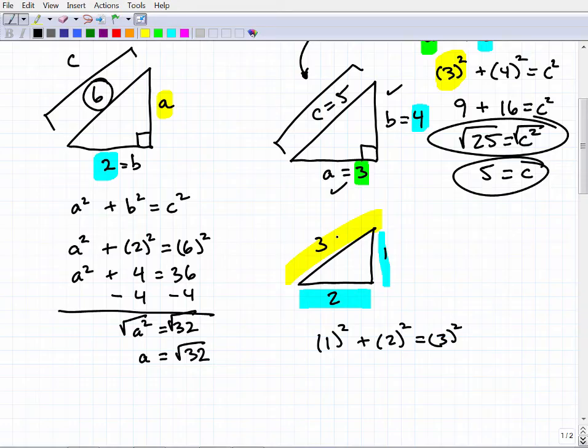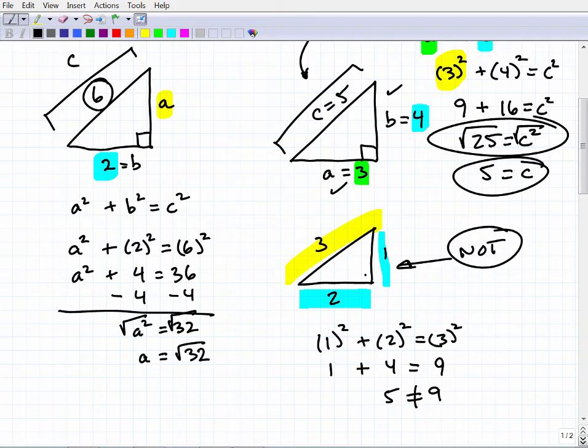So if this is a right triangle, this relationship would be true. So let's see, one squared is one, two squared is four, and is that equal to three squared, nine? No it's not, because this is five. And is that equal to nine? No. So this is not a right triangle. Therefore, obviously, it doesn't apply.